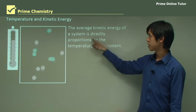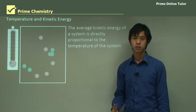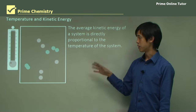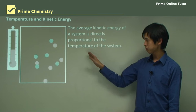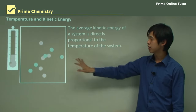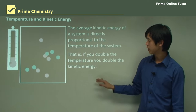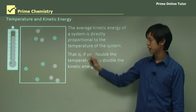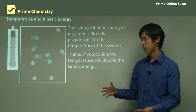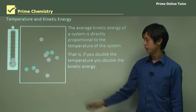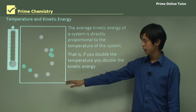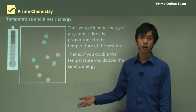The speeds won't always be the average speed, but the temperature tells us what the average is of all these different speeds occurring. The average kinetic energy of a system is directly proportional to the temperature. Boltzmann and several others studied the thermodynamics of gas systems and found that if you double the temperature, you'll double the kinetic energy of the gas.